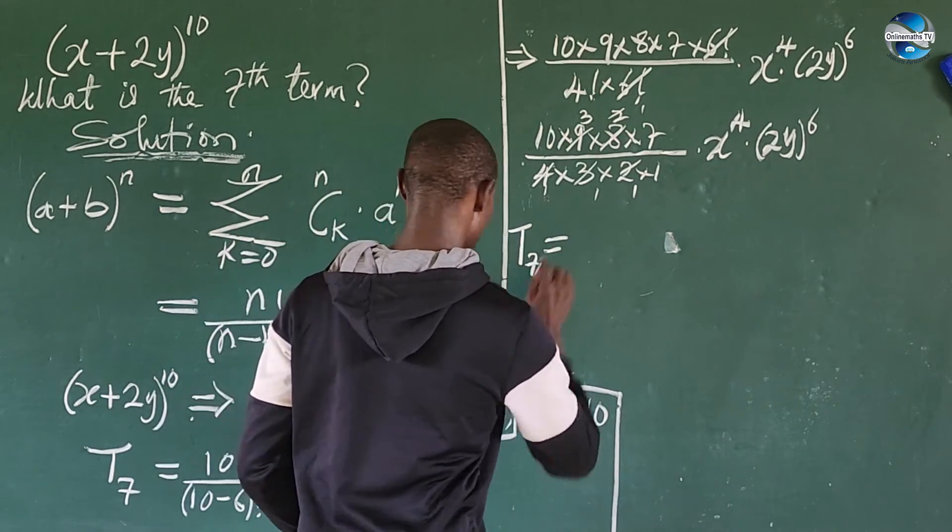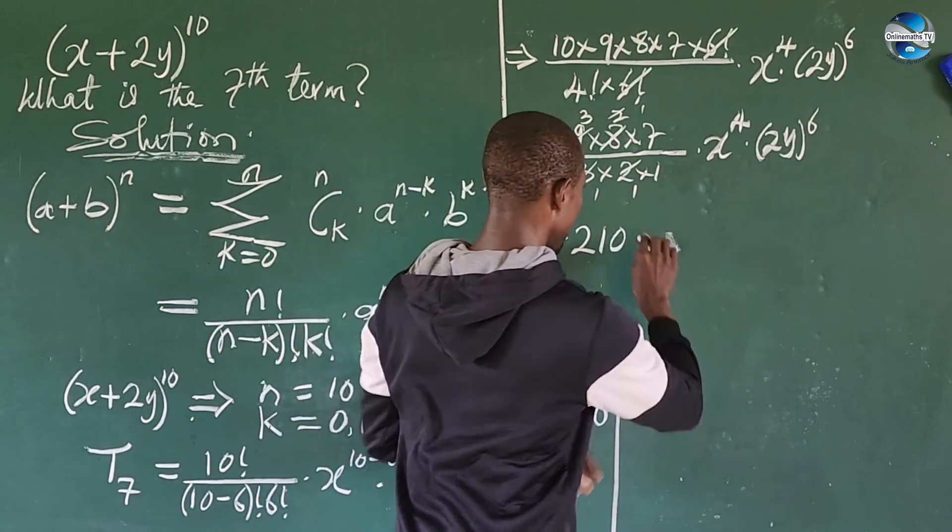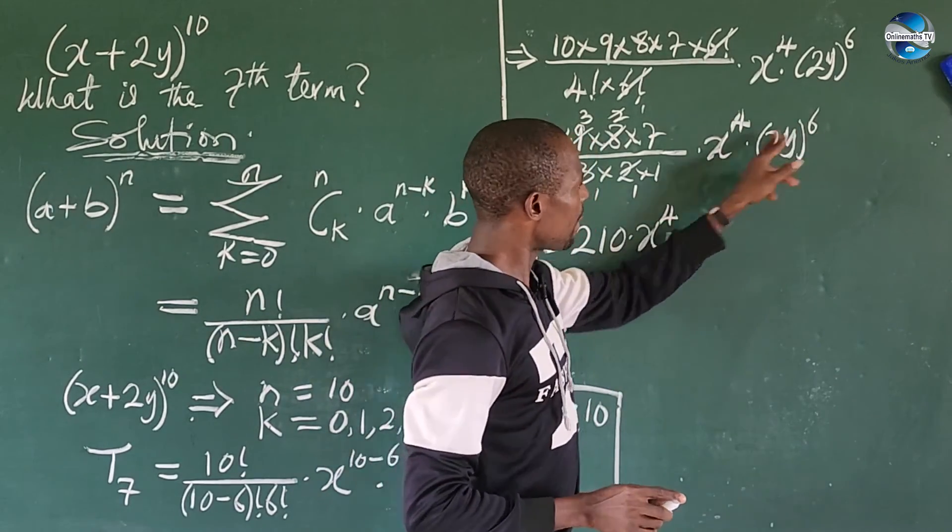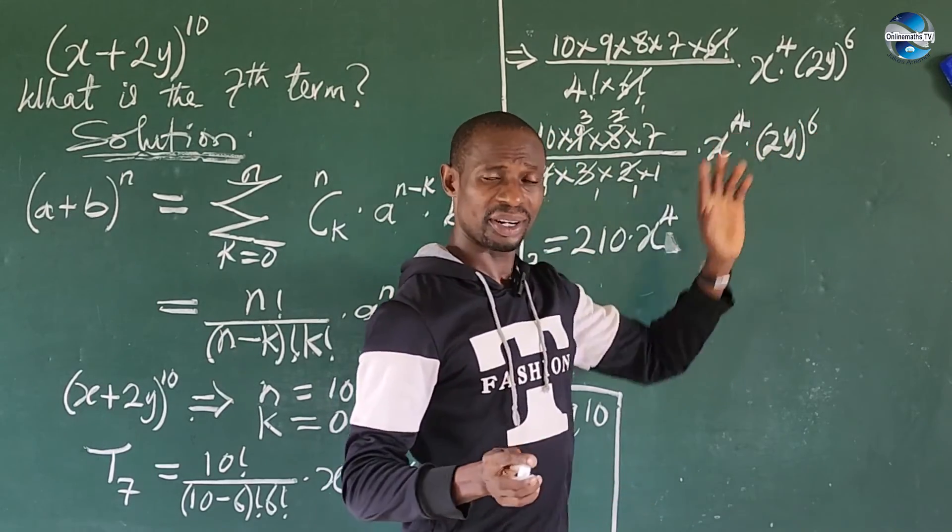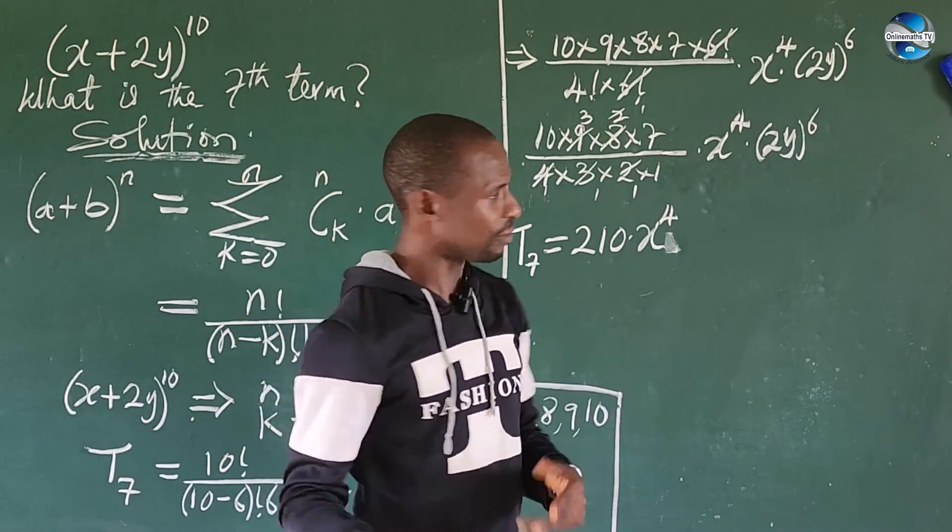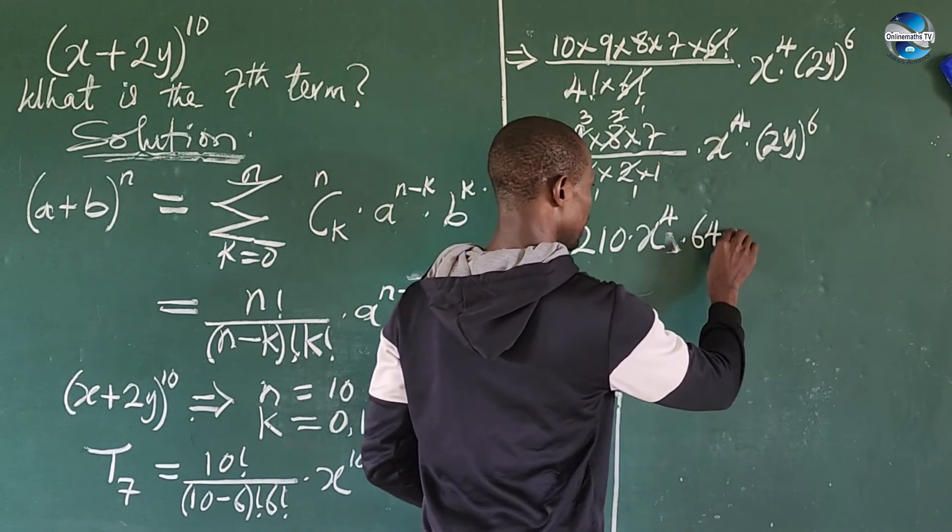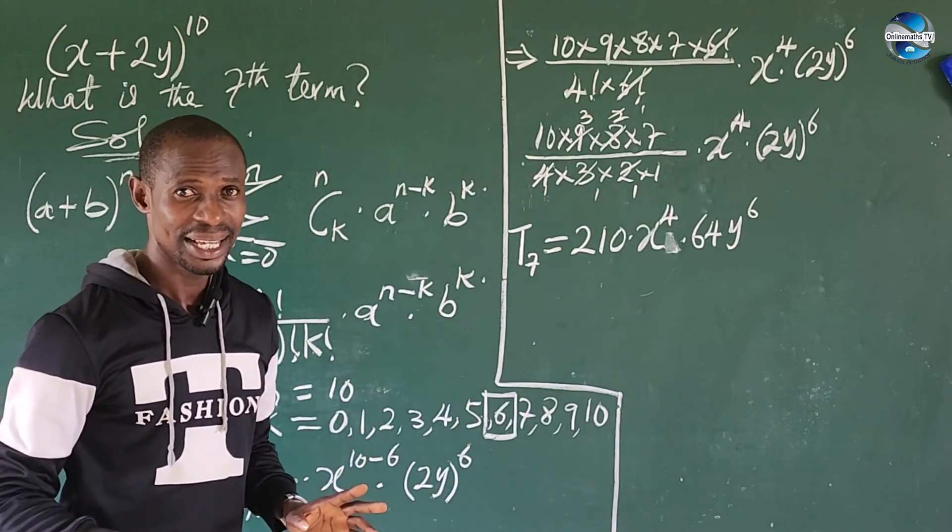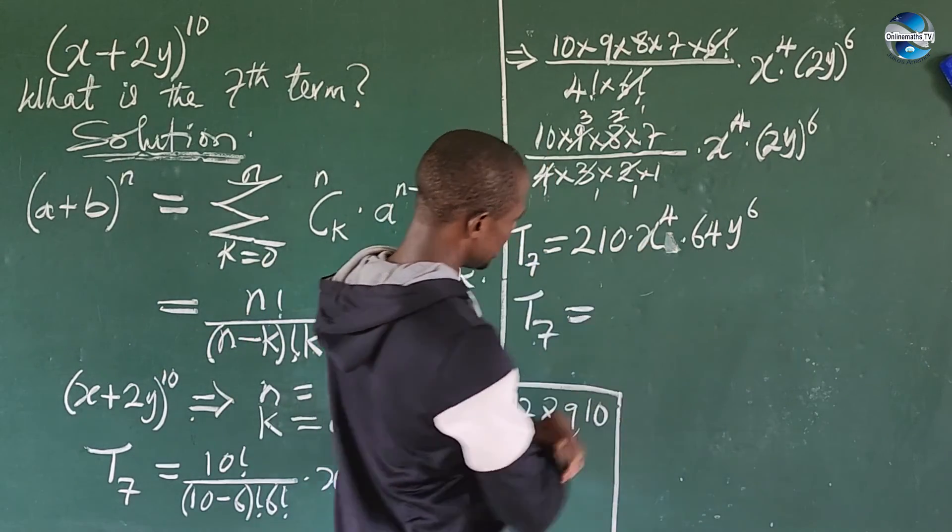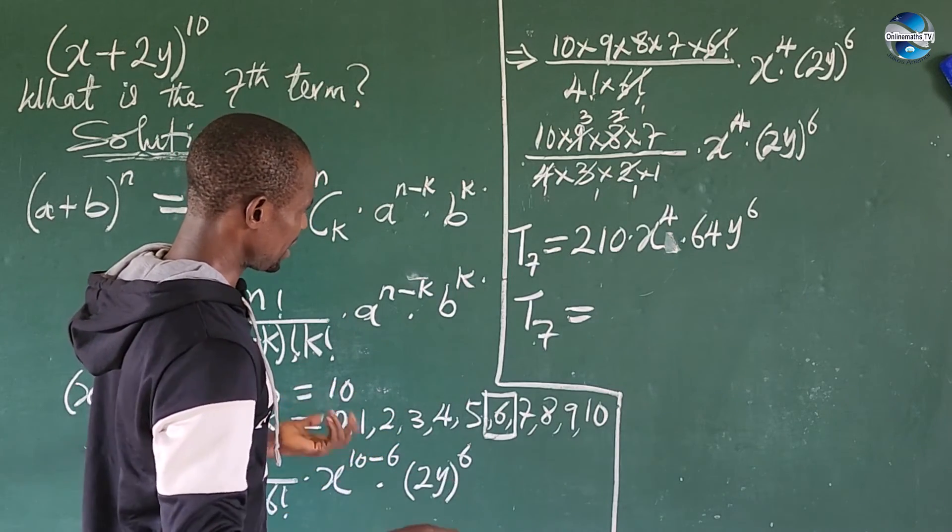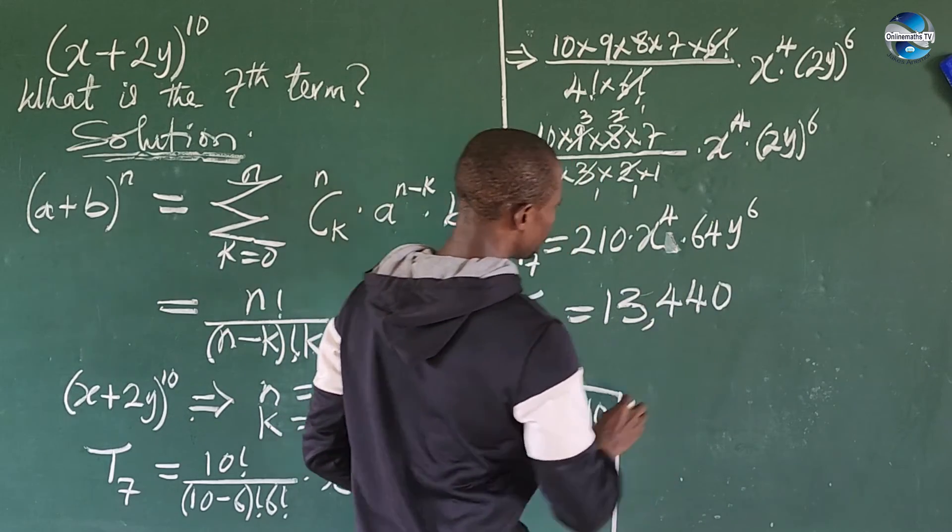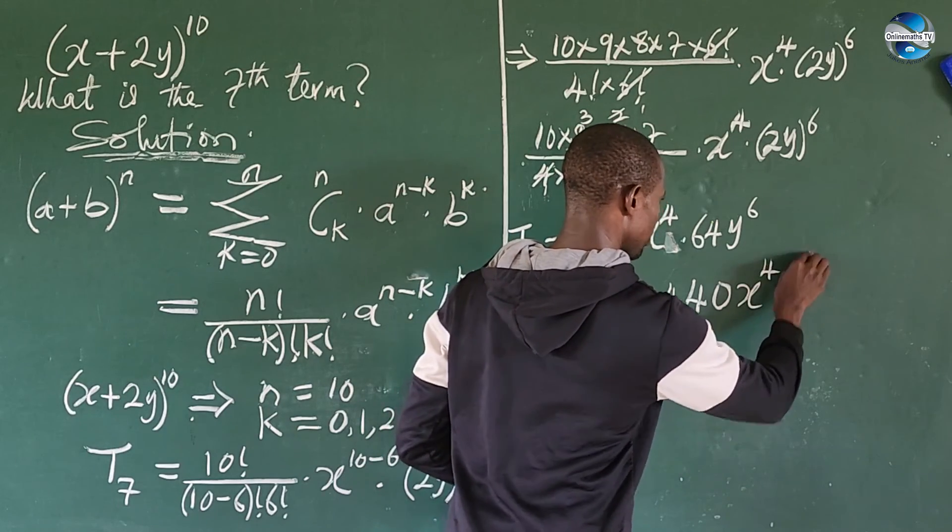So we're having 10 times 3 is 30, times 7 is 210. So we're having our T7, mind you. So our T7 is equal to 210 times x^4. Now we distribute this power among the content we have here. So we're having 2^6. 2^6 means 2 times 2 times 2 times 2, which is 4 times 4 times 4, that will give us 64. So we have this to be times 64, then y^6. Easy. So from here, we're going to have our T7. So T7 is equal to, we use this to multiply this. So 210 times 64, that will give us 13,440.